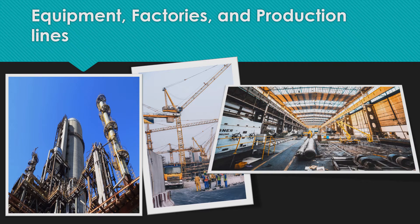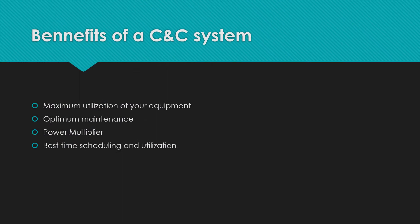It can also be used by factories that handle heavy equipment, such as production lines, where control over heavy equipment is needed. The benefits are maximum utilization of your equipment and optimum maintenance. It's a power multiplier — you don't need to add more equipment or more human resources, you just use what you have better. It allows you the best time scheduling and utilization.